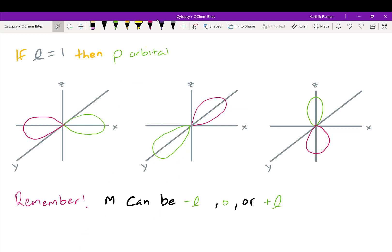L can also be 1. Remember, then L goes from 0 to n-1. And if n equals 2, then it's possible for L to equal 1. We give L equal 1 a special name, which is the p orbital. And the p orbital looks kind of like a teardrop. Here what you see are three orientations of the p orbital. There's p of x, there's p of y, and there's p of z.